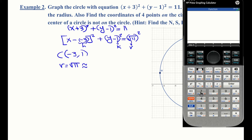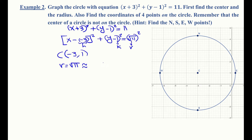The radius is √11, which is not a perfect square, so we use a calculator to get approximately 3.3. The circle has been shifted to the left, which follows the same transformation rules we discussed previously — when the change happens at the x level and it's a plus, that's a shift to the left.